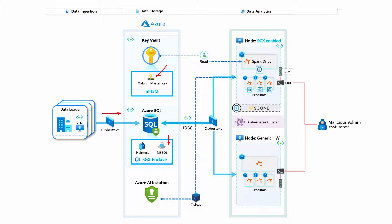On the right-hand side of the screen we're going to have a demonstration. First, we'll run Spark as we know it today with no SGX — taking the open-source version of Spark, loading data via JDBC into our Spark execution environment. We'll simulate a malicious admin with root access to the containers performing a memory dump, and you'll see that without SGX the malicious admin can exfiltrate the data. This is the first scenario.